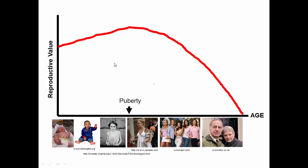This plot highlights something important about natural selection: genes that have their effect late in life, when expected reproduction is low, may not be under strong selection. Versus genes that have their effect at peak reproductive value — where a 10% increase or decrease would have the biggest impact on fitness — those genes would be most strongly selected. We'll revisit this concept later in a more formal way.